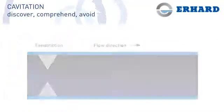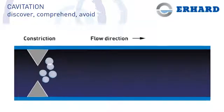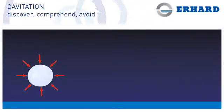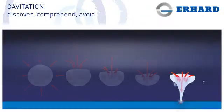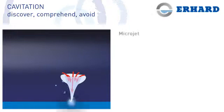In the case of cavitation, the vapour bubbles which form due to a pressure drop implode, recondensing to their liquid state when the pressure rises. The water surrounding the vapour bubbles is accelerated inwards within fractions of a second. Several of the resulting microjets hit the body or pipe wall at very high speed, which causes pressure peaks up to 10,000 bar.